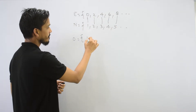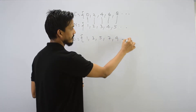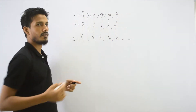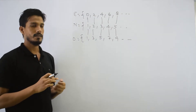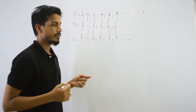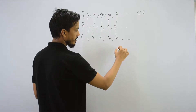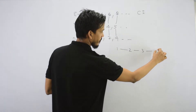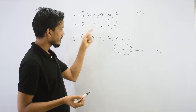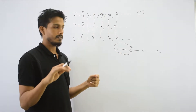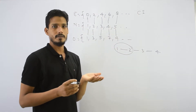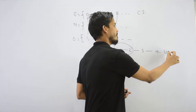The odd numbers are 1, 3, 5, 7, 9 and so on. So the mapping is: 1 to 1, 2 to 3, 3 to 5, 4 to 7, 5 to 9, and so on. If you have a mapping where any natural number will not be left unused, this is why we call a set countably infinite.